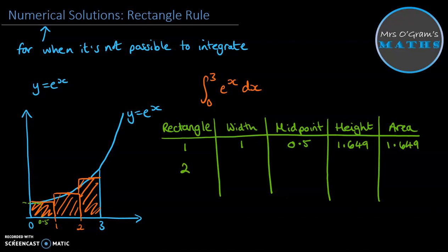I've kept it fairly simple. So the widths of all of these are actually just going to be 1. The midpoint for our second rectangle here is 1.5, making the height e to the 1.5, which comes to 4.482. Then we do the base times the height, so we've got an area of 4.482.